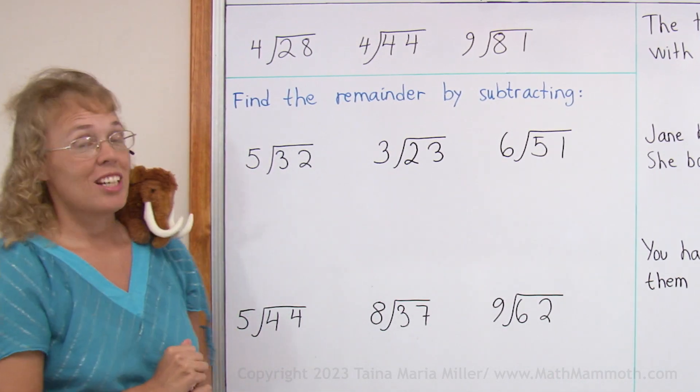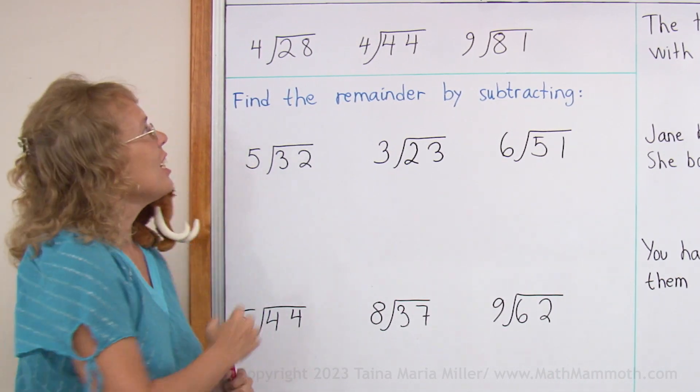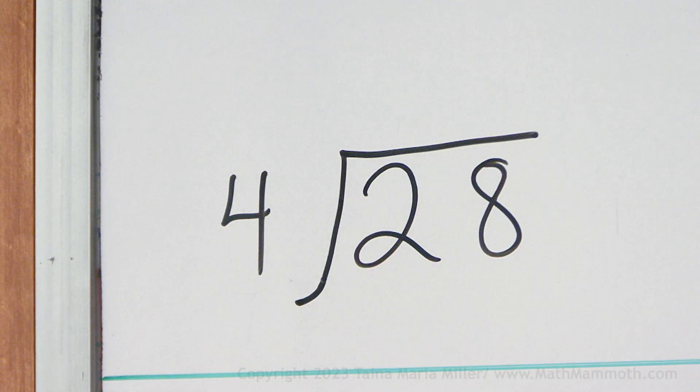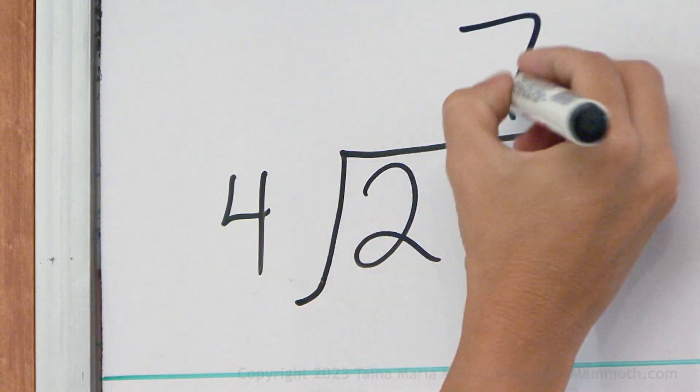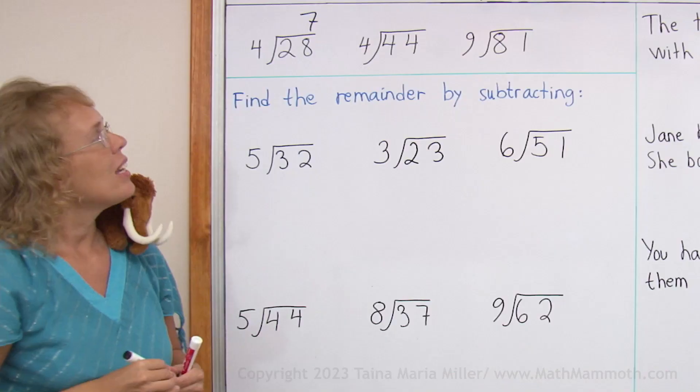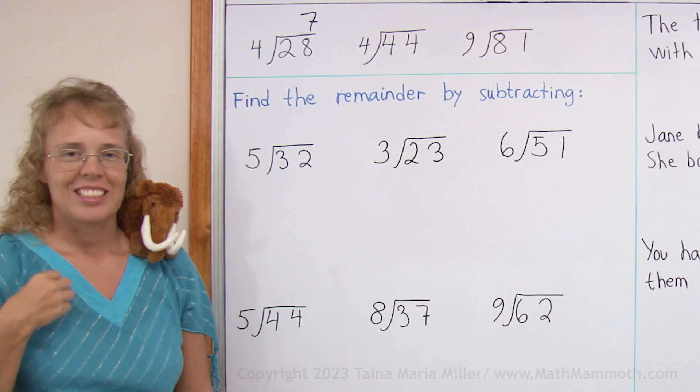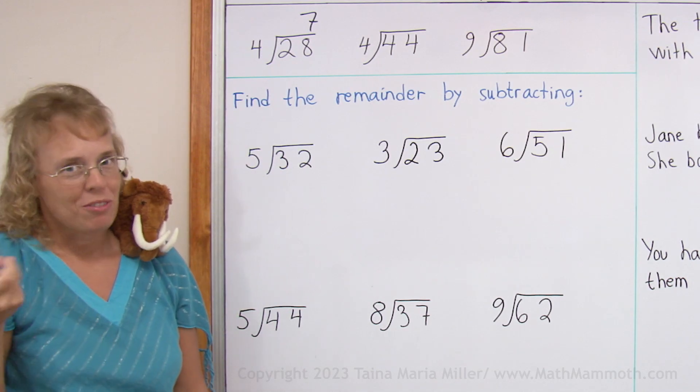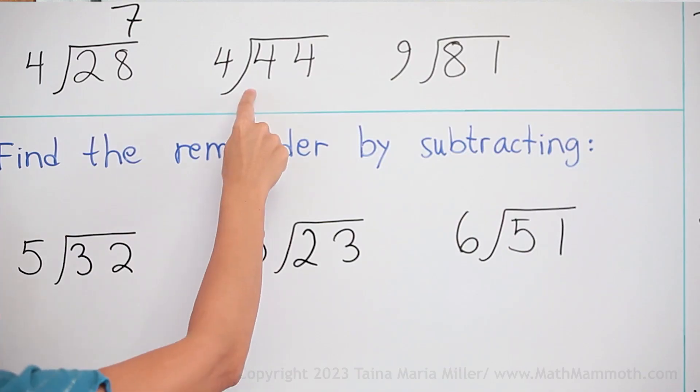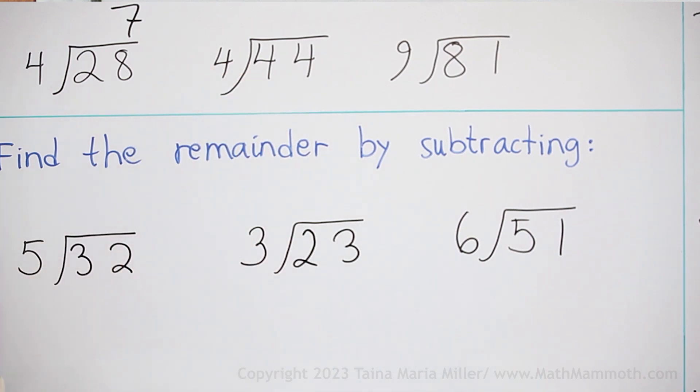First I need to show you another symbol for division and it is this thingy here. We have 28 divided by 4. The answer is 7. It gets written here on top of this line, on top of the symbol. I like to think of it as a division corner from the Finnish word. It's basically the number you're dividing goes inside the corner, so to speak.